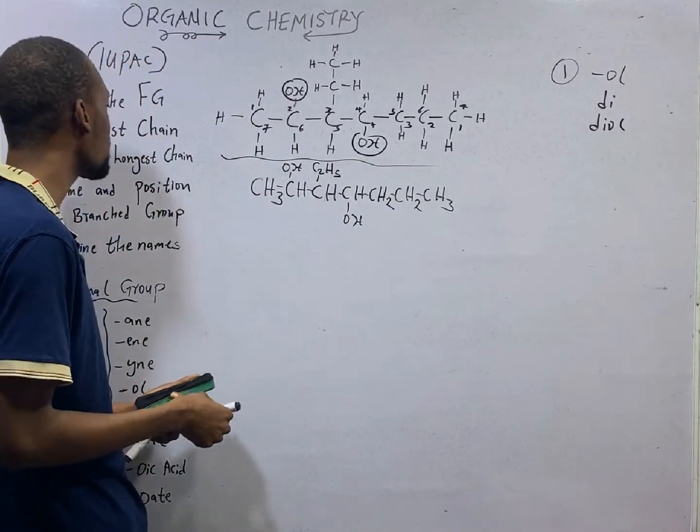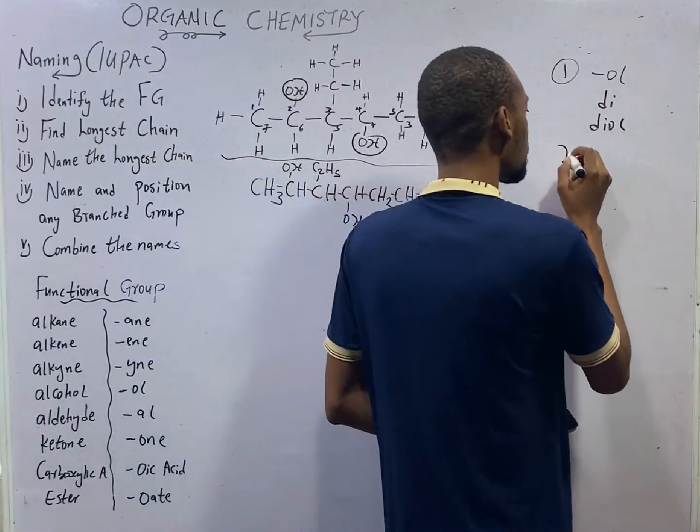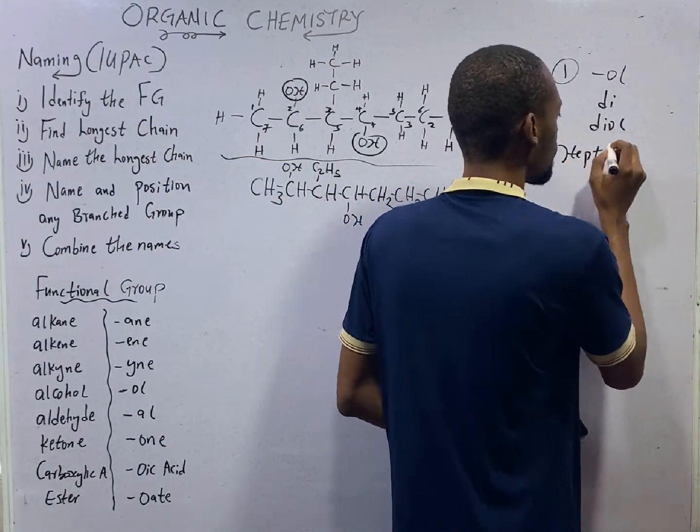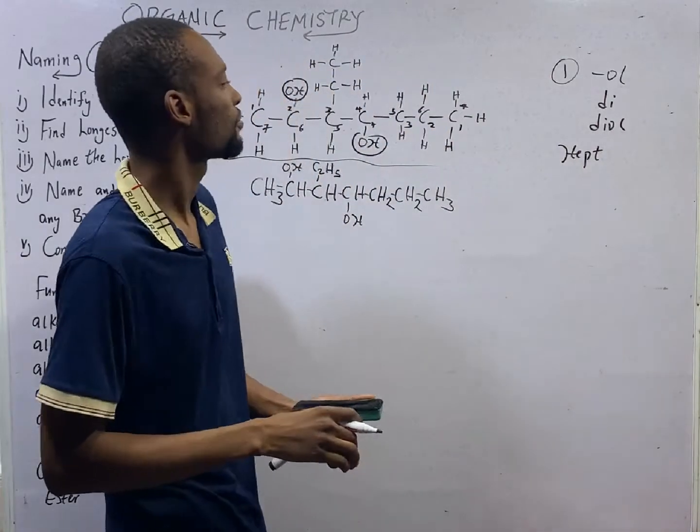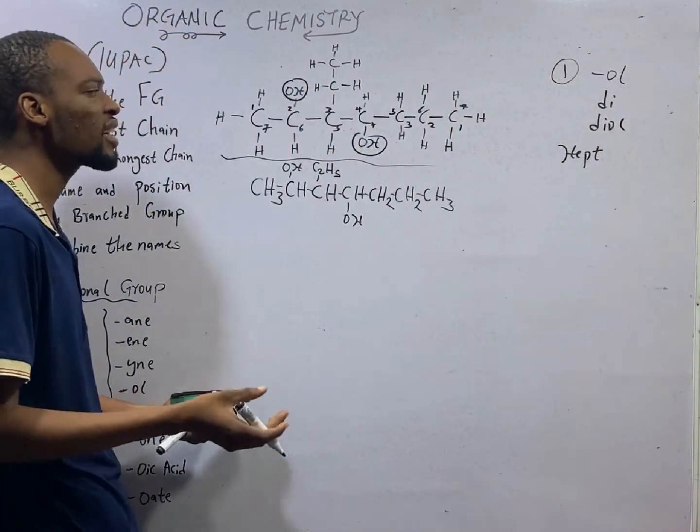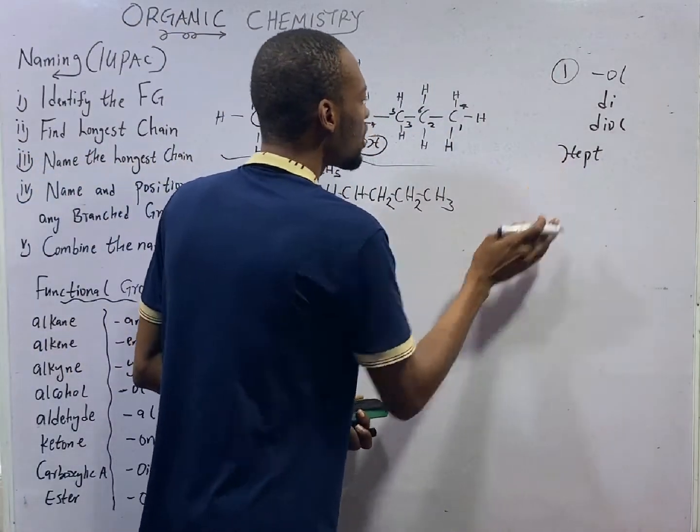So, name the longest chain. Seven is HEPT. HEPT. And the longest chain is the parent's name, HEPT.